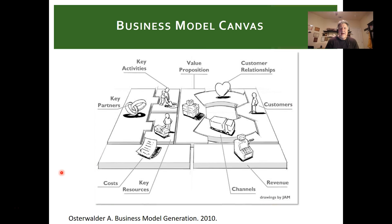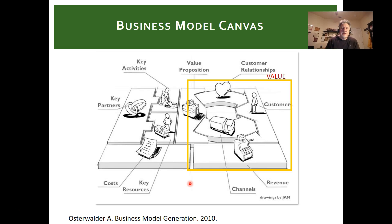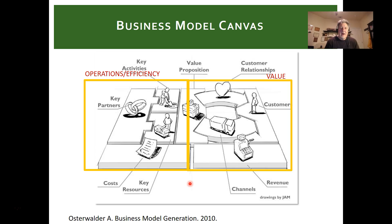So the first piece is value. As a quick recap, we have the BMC — Leah did a really nice job identifying the nine different pieces. But I like to break it down at a higher level: the right-hand part is the value piece, and the left-hand part is operations and efficiency. You need to balance both parts.